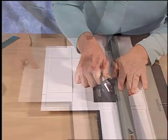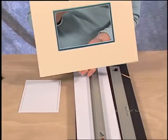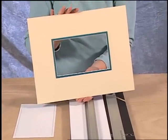After the fourth cut is completed, the two windows which are stuck together will fall out and you will have a perfectly aligned double mat.